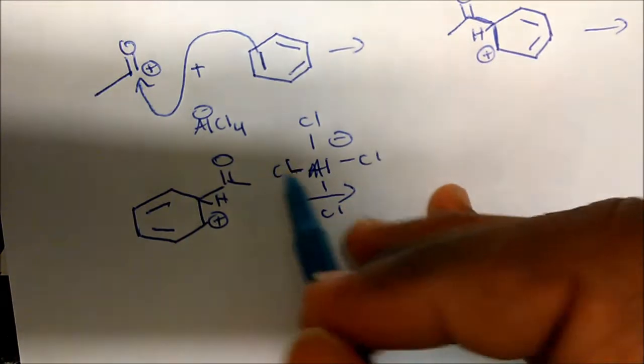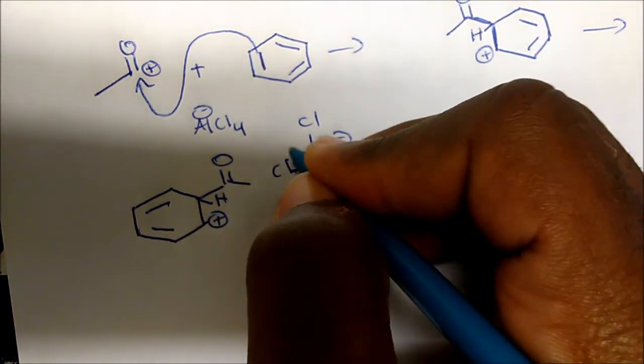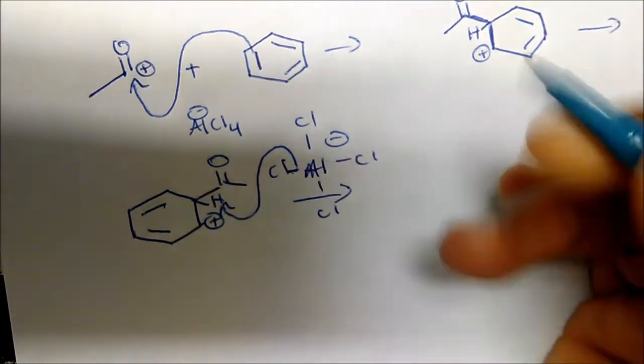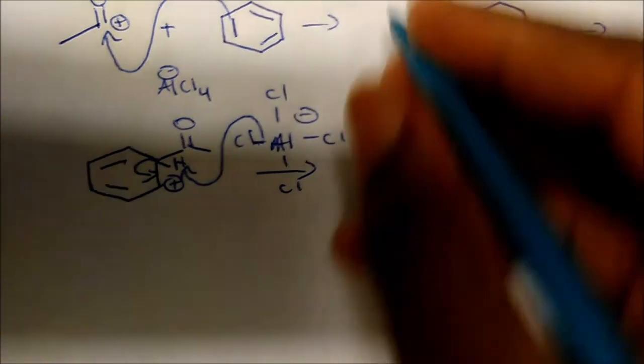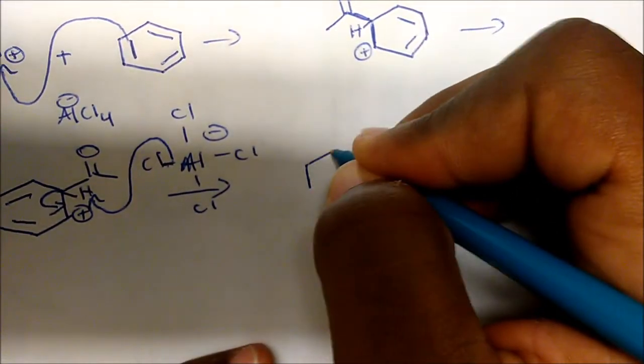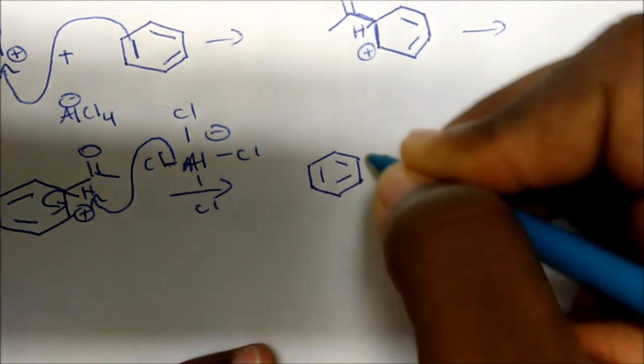That same chlorine is gonna act as a base, take the hydrogen off, and kick that bond here to reform the pi bond. So we form acetophenone plus HCl.